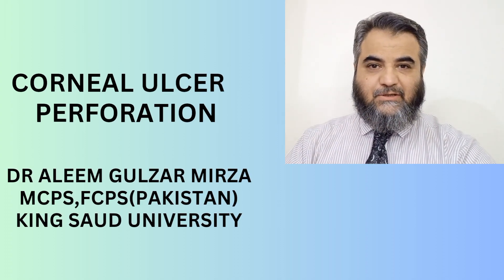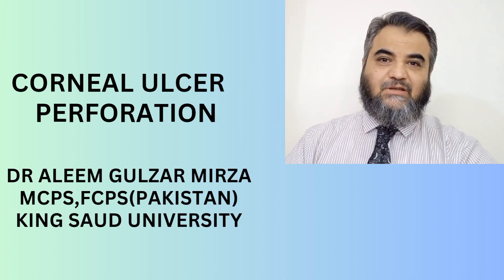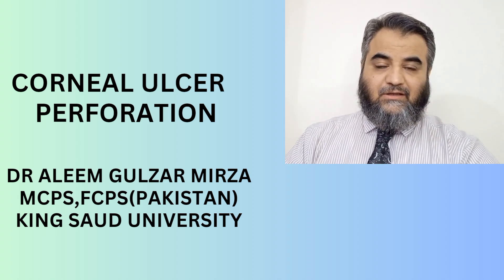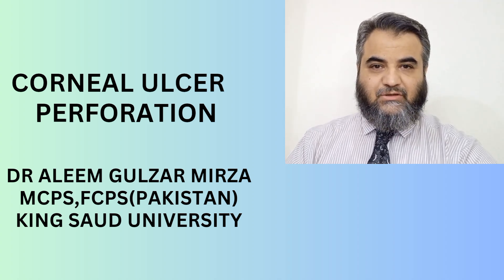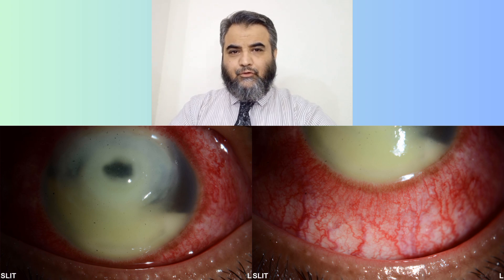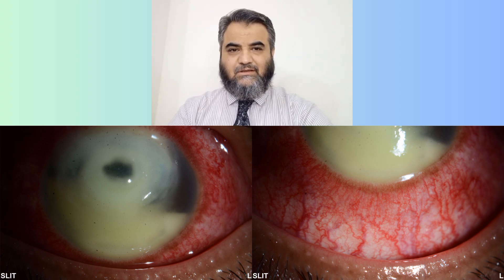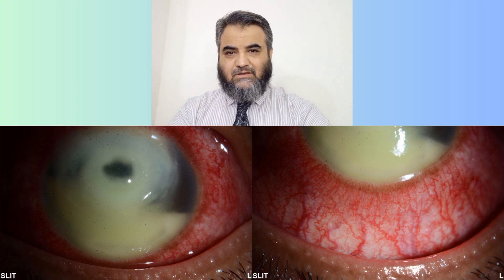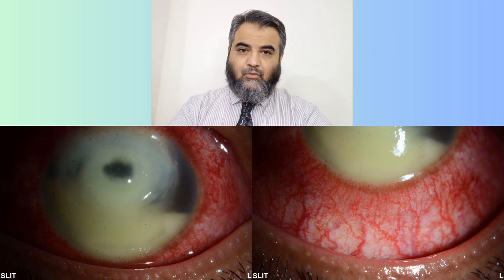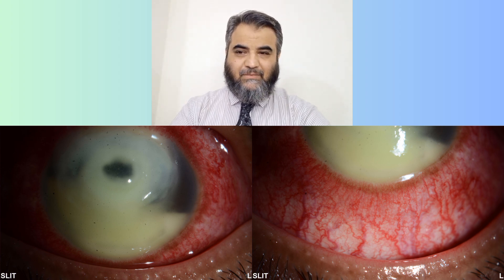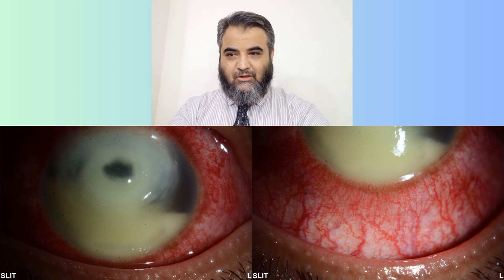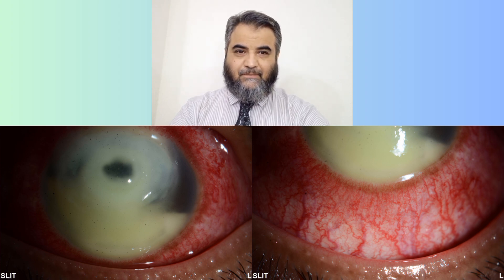Assalamu alaikum, respected audience. Today my topic of discussion is about corneal ulcers — different causes and possible management in case of corneal perforation. These are the corneal photographs of a patient. Here you can see there is a corneal abscess, the eye is congested, red, and inflamed. Along with that there is hypopyon which is almost four millimeters in height going up to the mid level, and there is a central corneal abscess. In the center area — in the visual axis — there is corneal thinning.